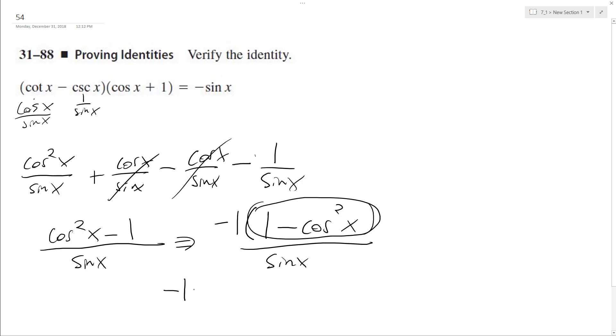So we get negative sine squared x, which is the same thing as sine x sine x over sine x. And we end up with negative sine x.